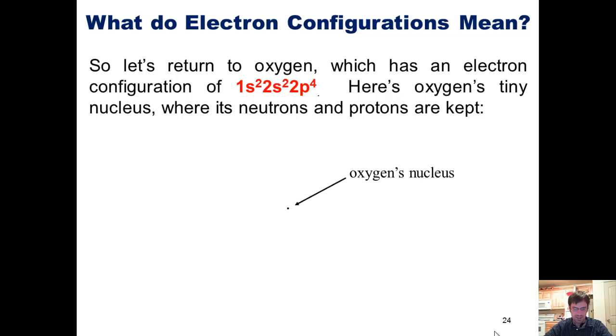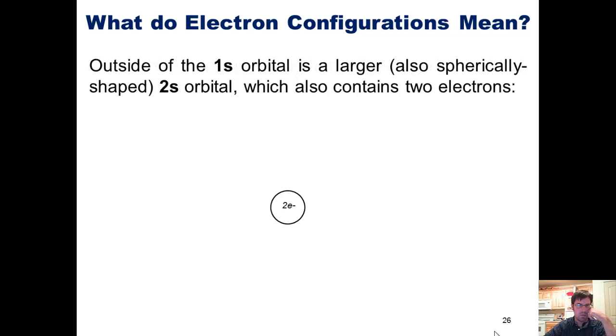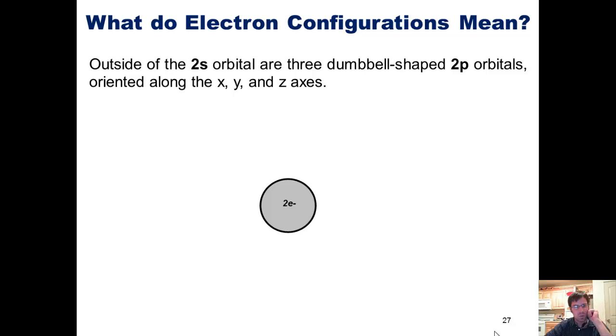Here's oxygen's tiny nucleus, where its neutrons and protons are kept. Around the nucleus is a spherically shaped 1s orbital. It contains two electrons. Outside of the 1s orbital is a larger, also spherically shaped, 2s orbital, which also contains two electrons. Outside of the 2s orbital are three dumbbell-shaped 2p orbitals, oriented along the x, y, and z axes.